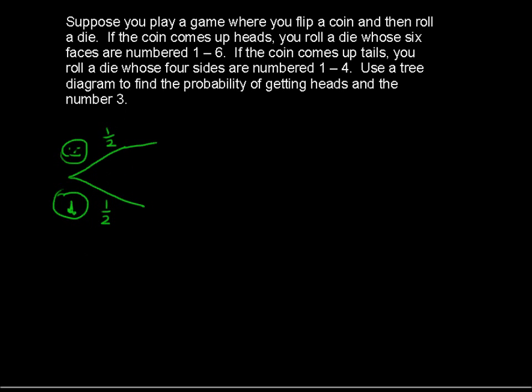When you get heads, you roll the six-sided die. And you can get either a 1 or a 2 or a 3 or a 4 or a 5 or a 6. So these are curved branches. And each one of those has a probability of 1 in 6. So I'll put 1, 2, 3,